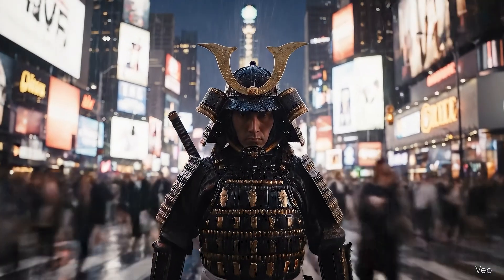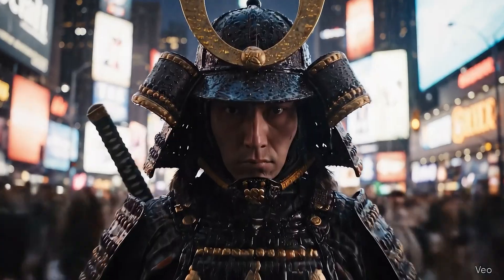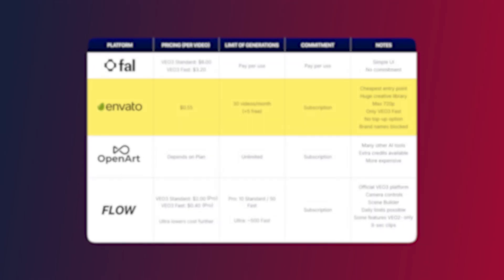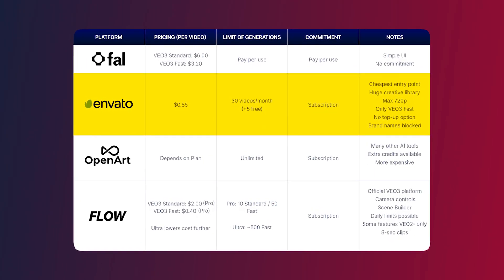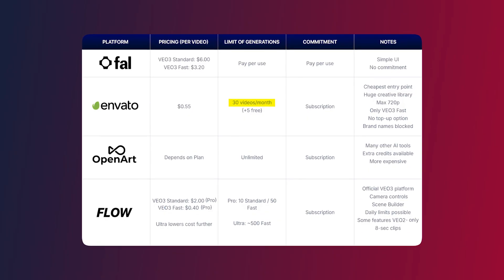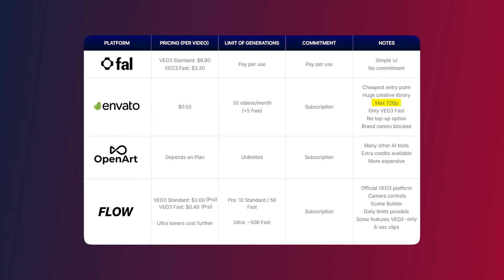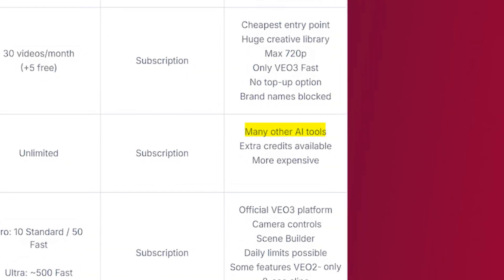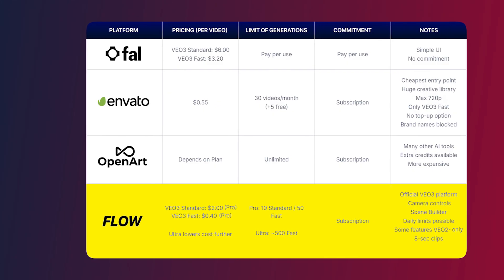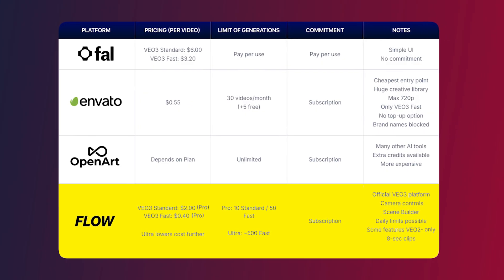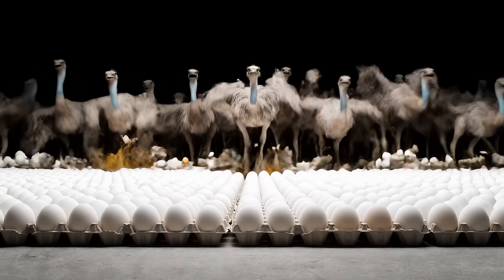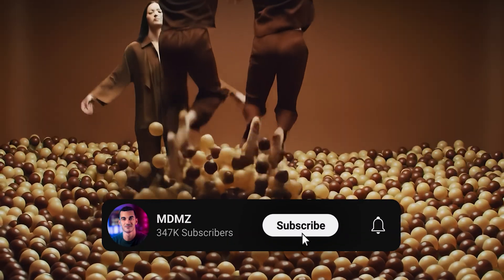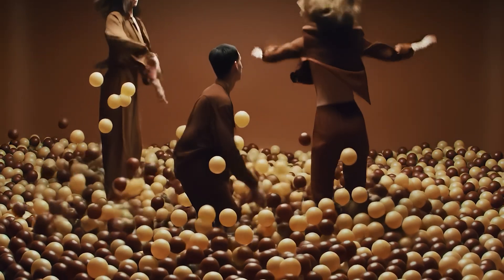Here's the bottom line: if you just want to test Veo 3 without committing, fal.ai is the quickest option but the most expensive per video. Envato Elements has the cheapest entry point — 30 videos a month for just cents each — though you're limited to 720p and can't top up. OpenArt stands out if you use AI frequently and care about creative assets. And Flow, if you're generating a lot, actually works out to be the cheapest per video. It really depends on what you need. Regardless of where you use Veo 3, subscribe, stay creative, and I'll see you in the next video.